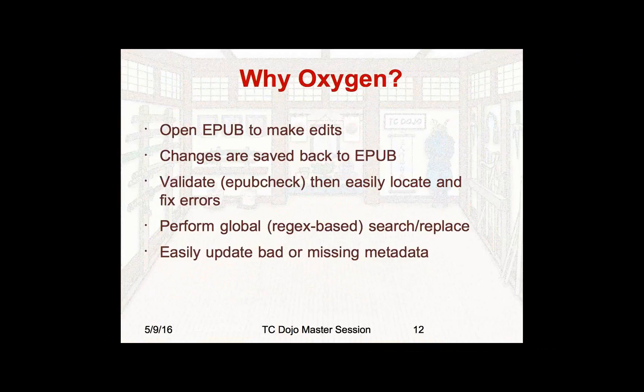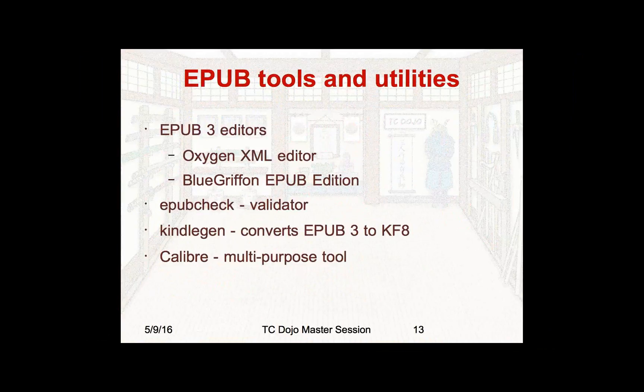The great thing about Oxygen is it lets you just open the EPUB directly and make edits. When you save it, it just writes it all back into the EPUB — you don't have to take the EPUB apart and worry about how to put it back together. It has a built-in validation tool — the EPUB check tool is built in, so you can just click the button and it shows you where all the problems are. You can perform global regex-based search and replace across all files in your EPUB, which is a huge benefit if you've got hundreds or thousands of files. It also lets you update missing or wrong metadata.